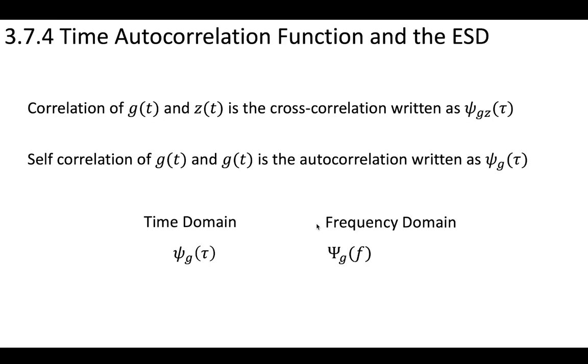Now, if you are going to do this, then you can also define this autocorrelation signal in the time domain and the frequency domain. So you have ψ_g(τ) and then the capital Ψ_g in the frequency domain. And in the frequency domain, without going into the actual math, what you will find is that Ψ_g(f) is equal to |G(f)|².